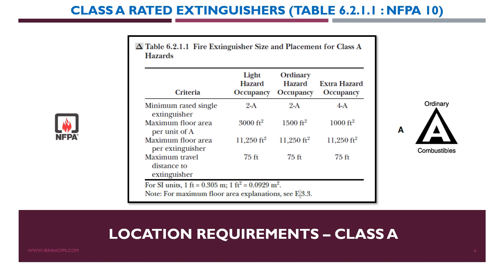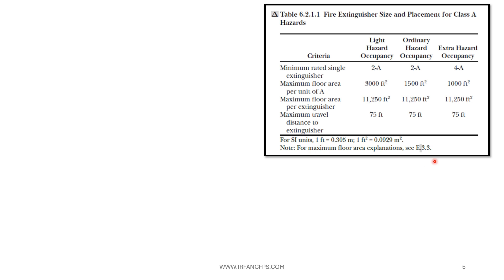So in this slide, let us try to consider an example to understand or to calculate the number of extinguishers for a particular building based on the maximum floor area concept. So here you can see maximum floor area per extinguisher for light hazard, ordinary hazard and extra hazard occupancy is 11,250 square feet.